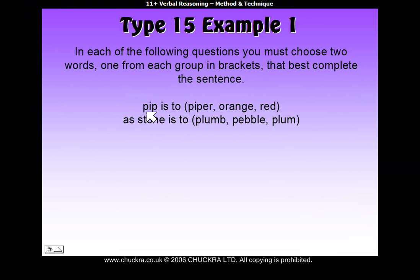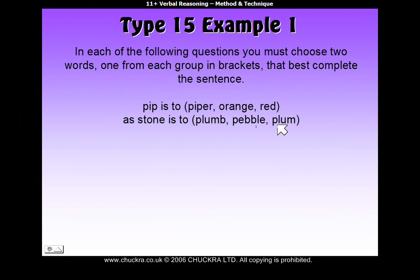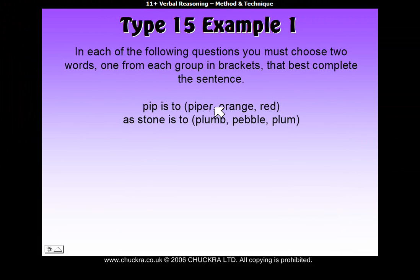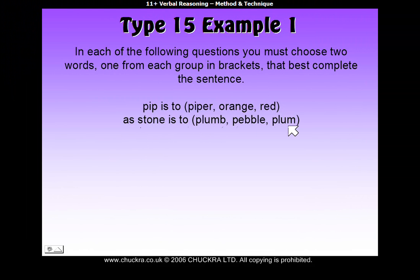Here's our example question: 'Pip is to...' — they give you a group of words and you choose one — 'as stone is to...' — they give you another group. The relationship between pip and whatever word you choose from the first group has to be the same relationship between stone and the word you choose from the second group.